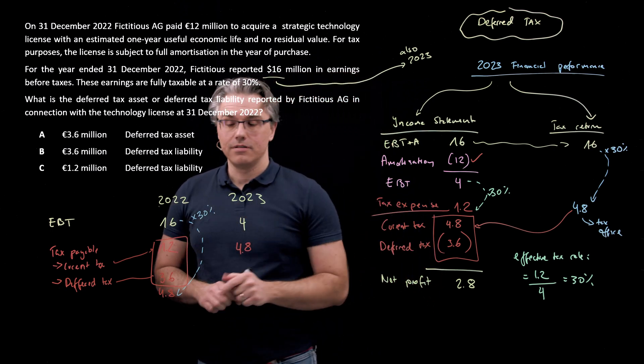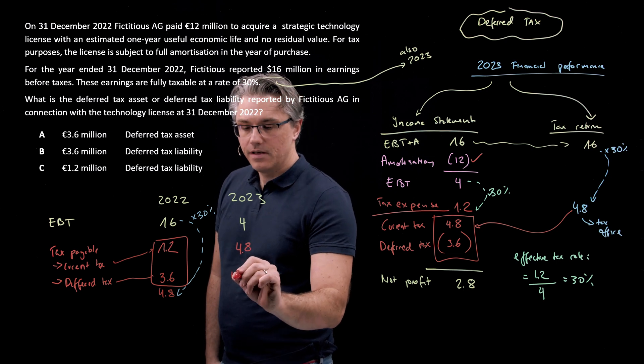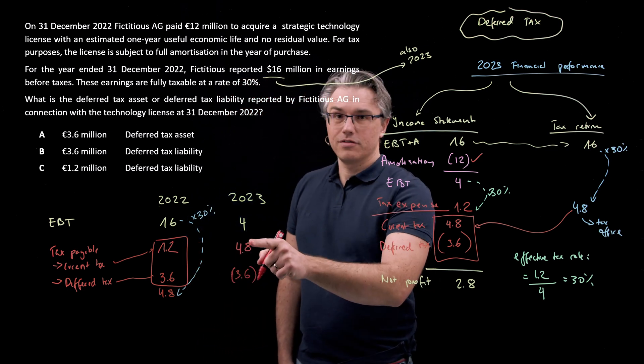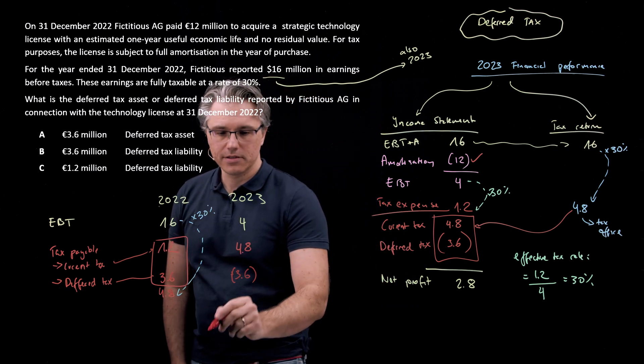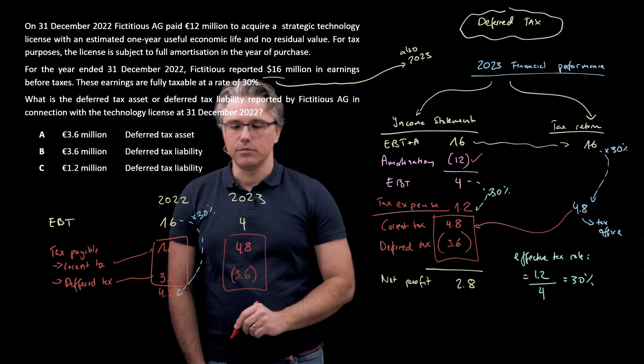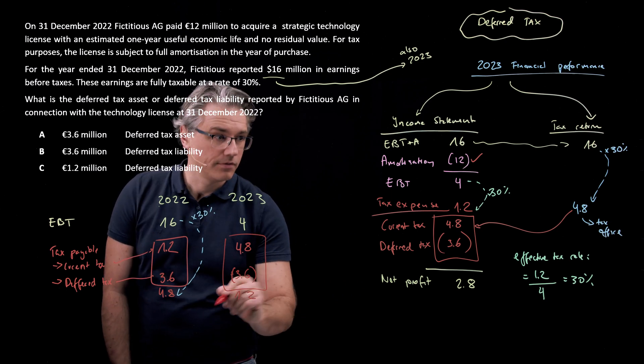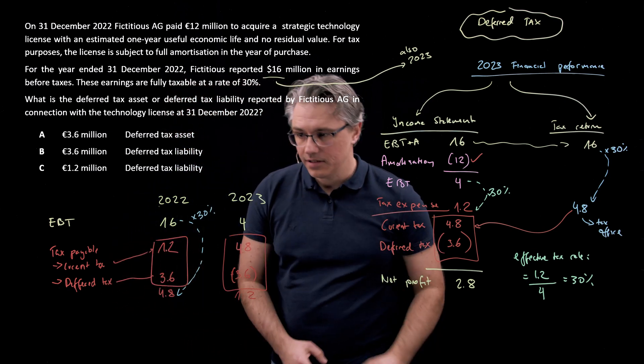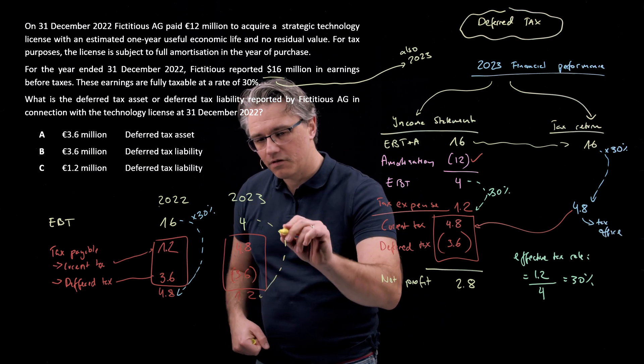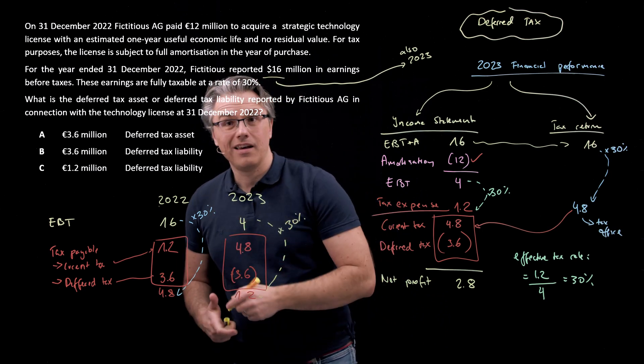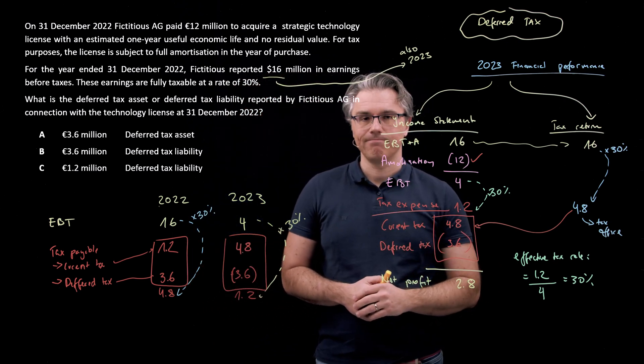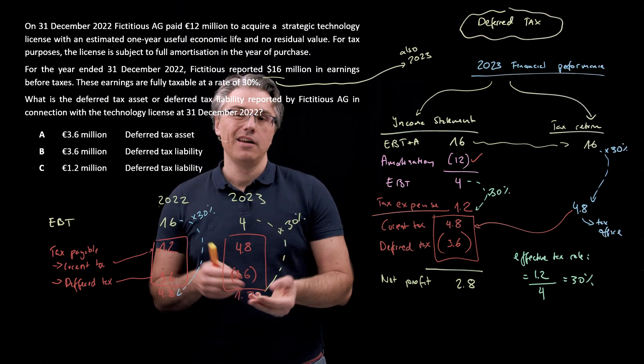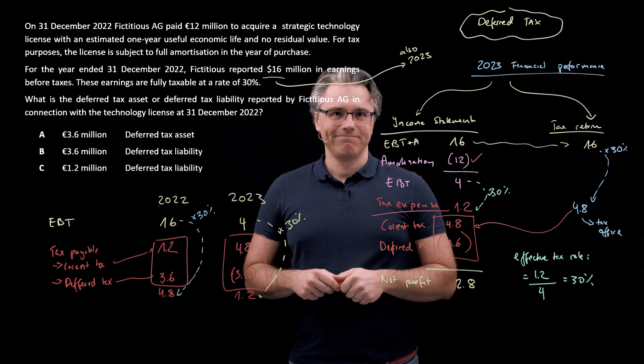In the subsequent year, in 2023, that is reversed. So we reduce tax payable, which is right now loaded with quite a lot of current tax, by 3.6. And this brings the overall tax payable amount to just 1.2, like we have over here, or not tax payable, the tax expense. But once again, that is perfectly in line with the fact that we've got a 30% statutory tax rate and 4 million of earnings before tax. So, loading tax expense with an additional charge and then offloading it just to create a temporary shift, so to speak.